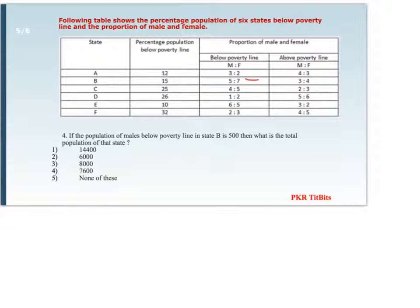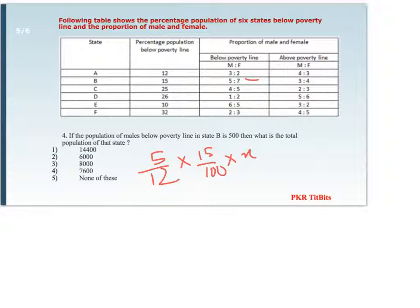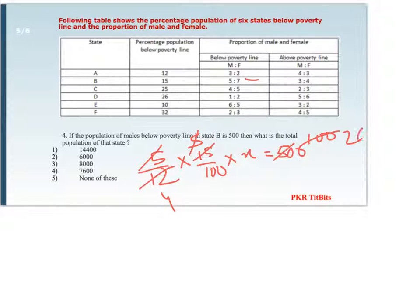New question: the male ratio below poverty line is 5 by 12, and the below poverty line percentage is 15%. So: (5/12) × (15/100) × X = 500. Solving for X: 500 × 100 × 12 ÷ (5 × 15) = 8000. So option 3 is our answer.